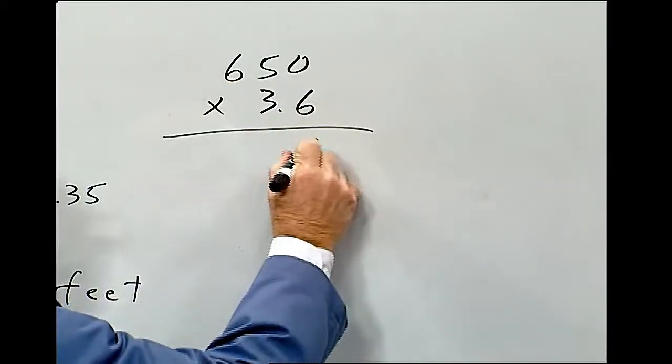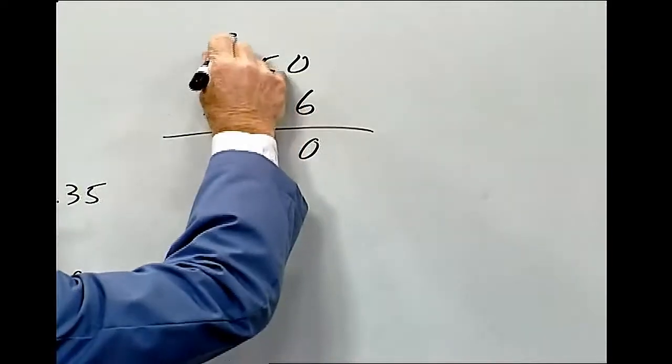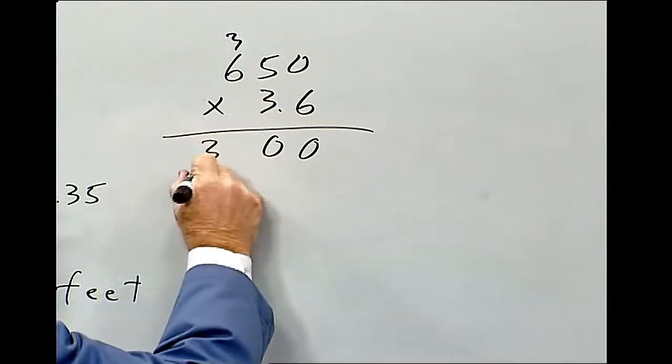So, 6 times 0 is 0. 6 times 5 is 30. 6 times 6 is 39.